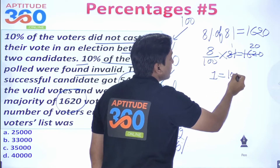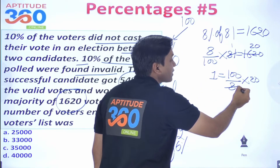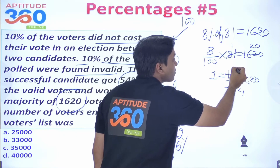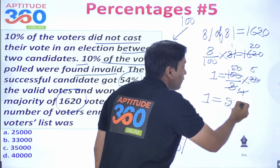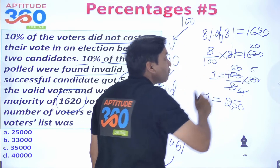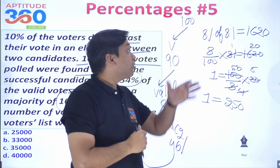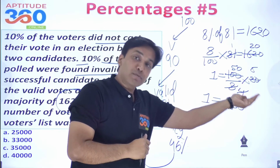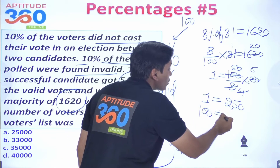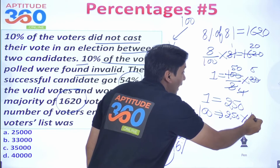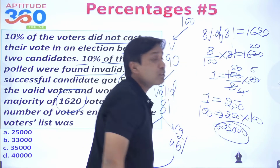Continuing: 1 unit = 100/8 × 20 = 250. We took 100 voters, and 1 unit = 250, so total voters = 250 × 100 = 25,000. The answer is 25,000 voters. This shows how taking 100 as base simplifies what seems like a complicated problem.